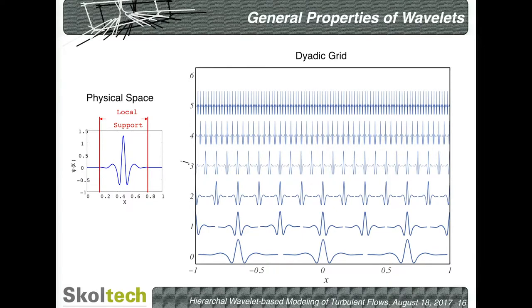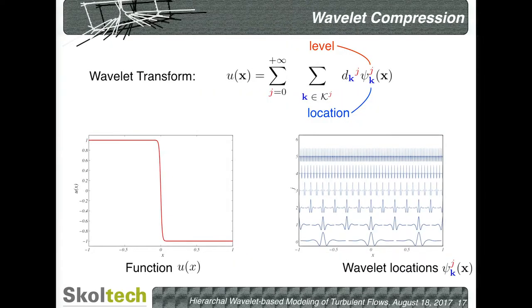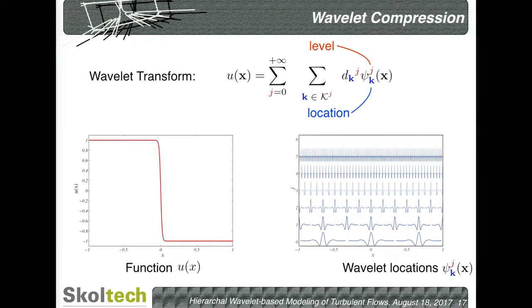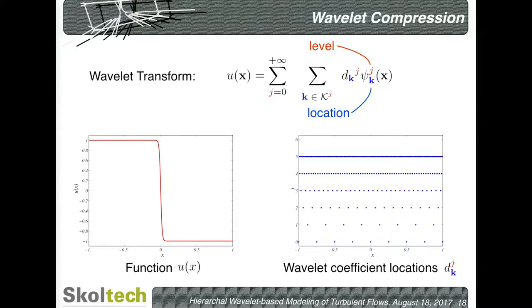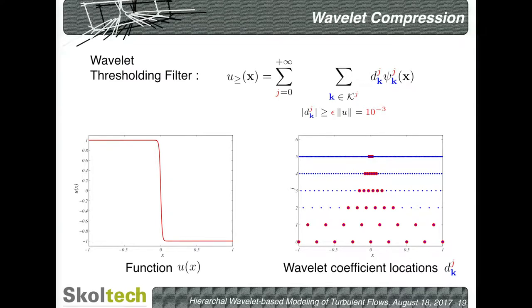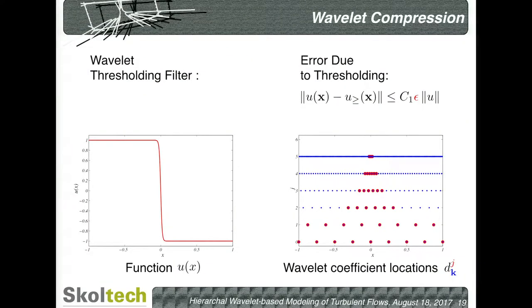If I decompose a signal with a sharp transition using wavelets, I get wavelet coefficients at each location, but only a few of these locations have large wavelet coefficients. In this particular case, coefficients above 10⁻³ are marked in red. The important property that allows adaptation is that the difference between the original signal and the truncated wavelet signal is controlled by the threshold parameter epsilon. Smaller epsilon means less error; larger epsilon means more error. This allows us to actively control the accuracy of our simulation.